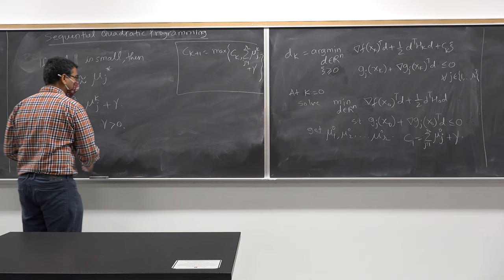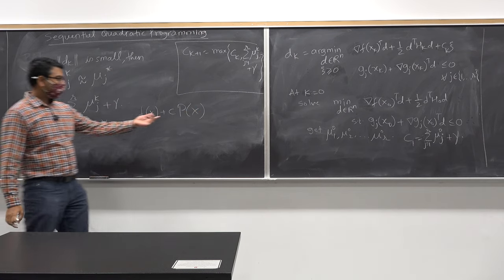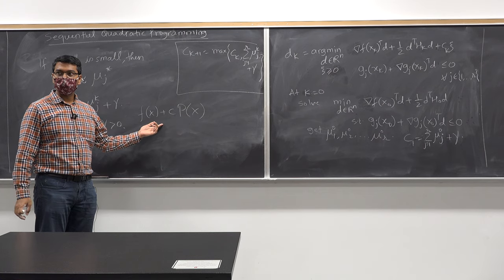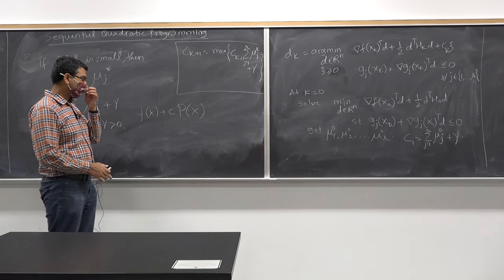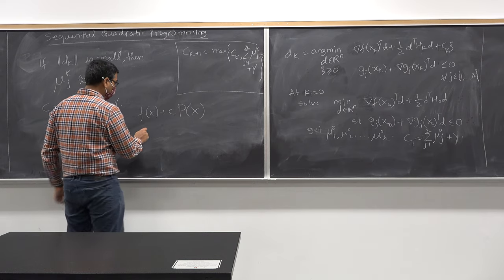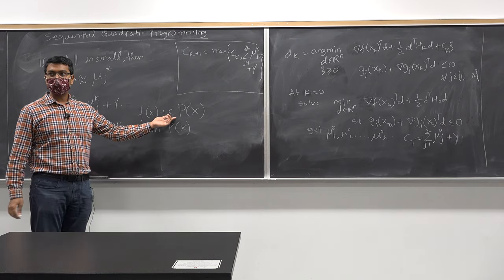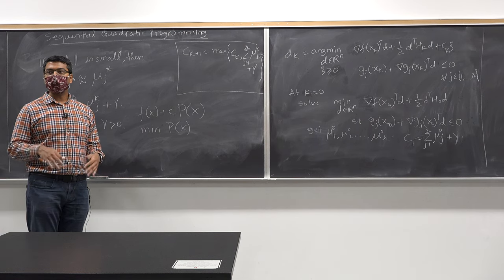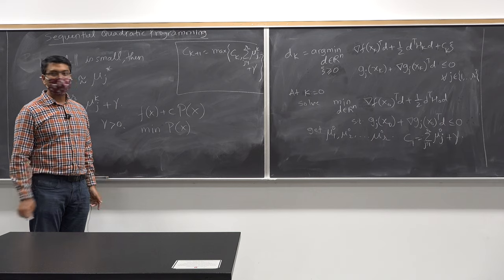If you pick a very large value of C, then f(x) becomes a very small component of the objective and you put much more weight on the penalty term P(x). You will effectively be minimizing P(x), which only gives you a feasible point — a point within the constraint set — but not necessarily one that minimizes the original objective function. That is what you want to avoid.